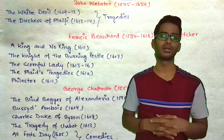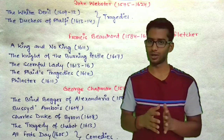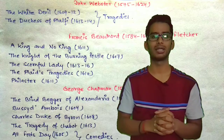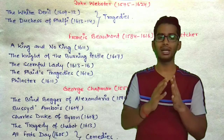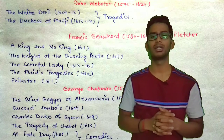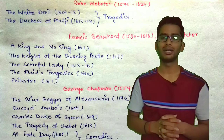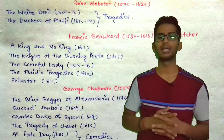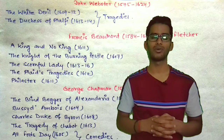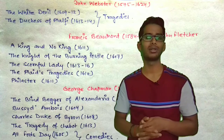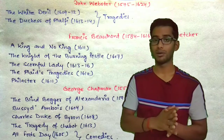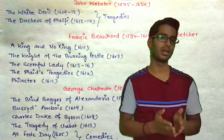Francis Beaumont and John Fletcher wrote all their works in collaboration. Their important works include A King and No King, published in 1611; The Knight of the Burning Pestle, 1607; The Scornful Lady, published between 1613 to 1616; The Maid's Tragedy; and Philaster, 1611.